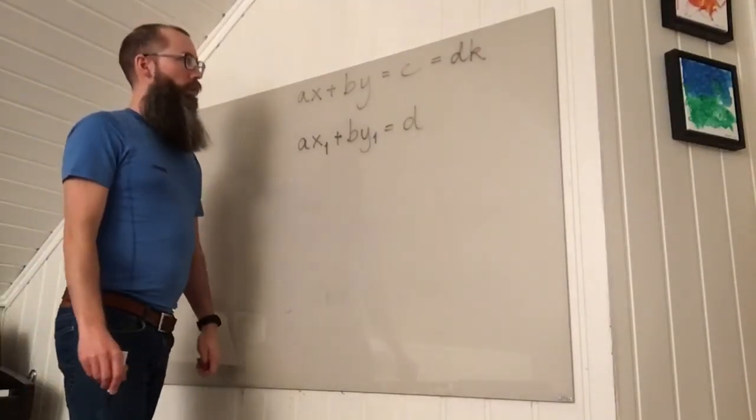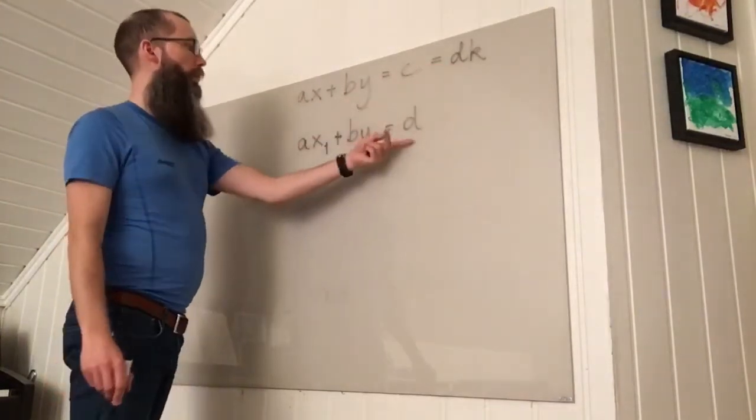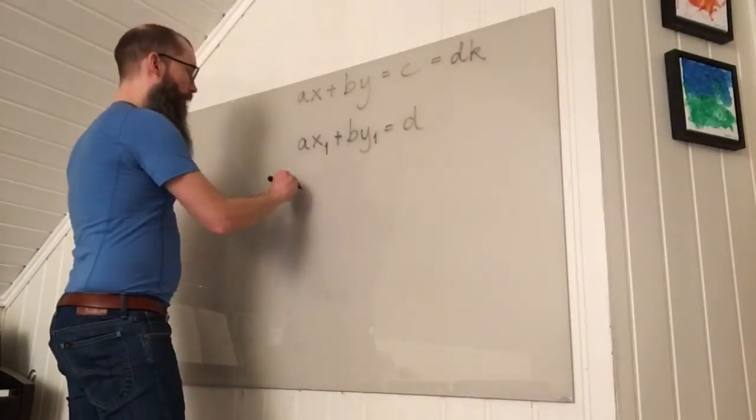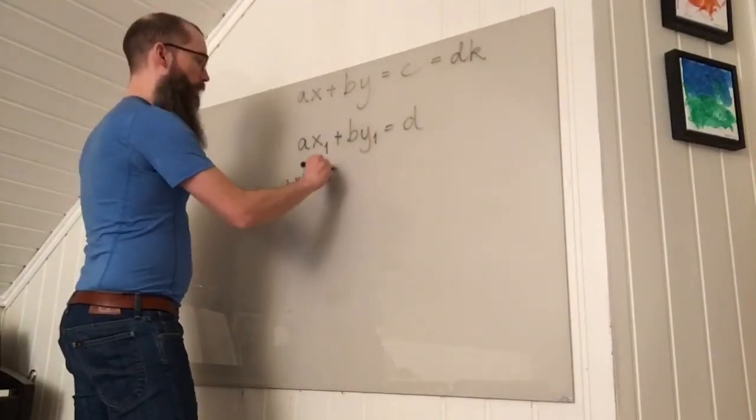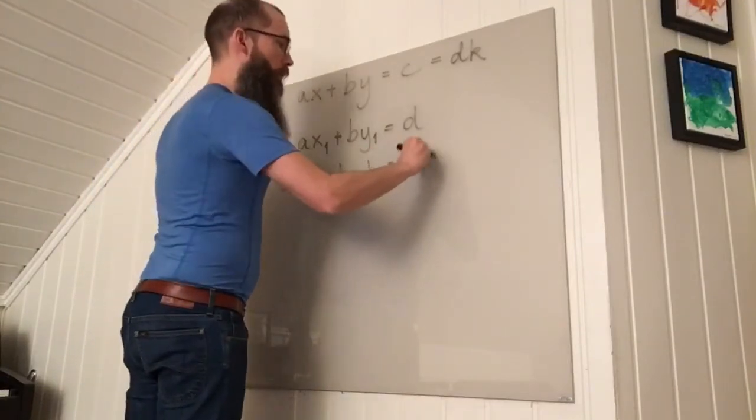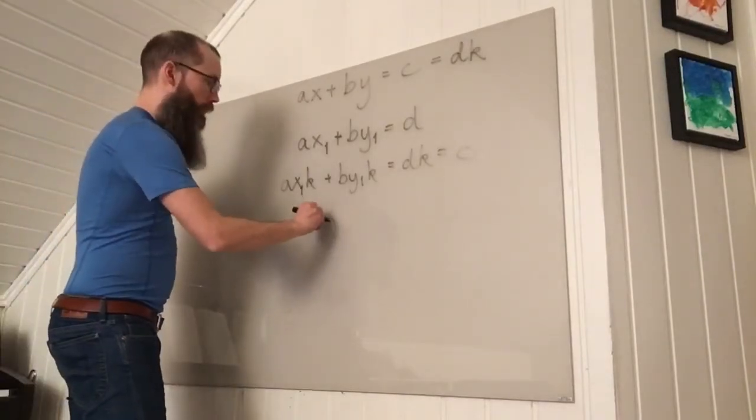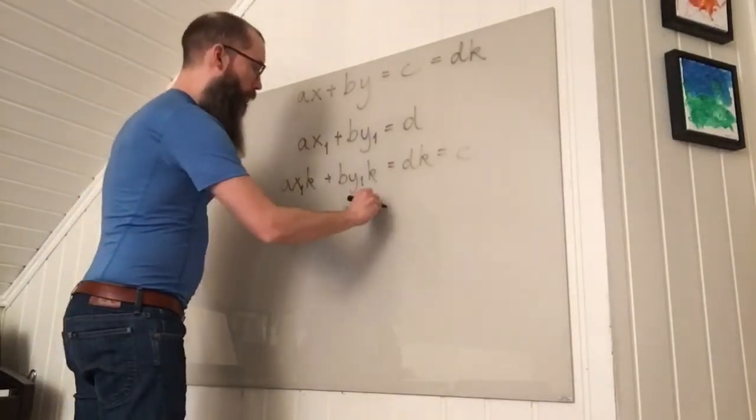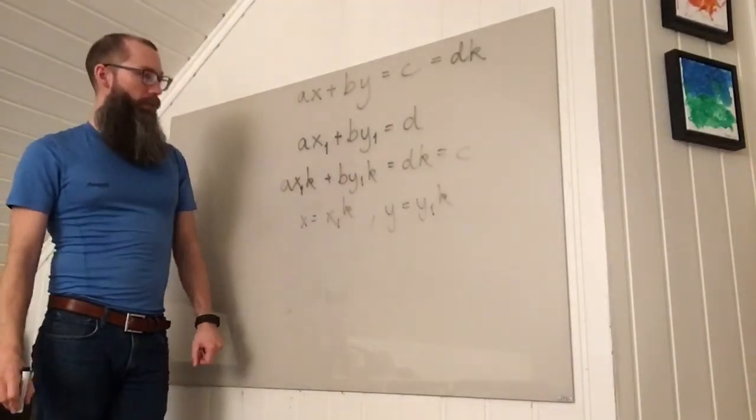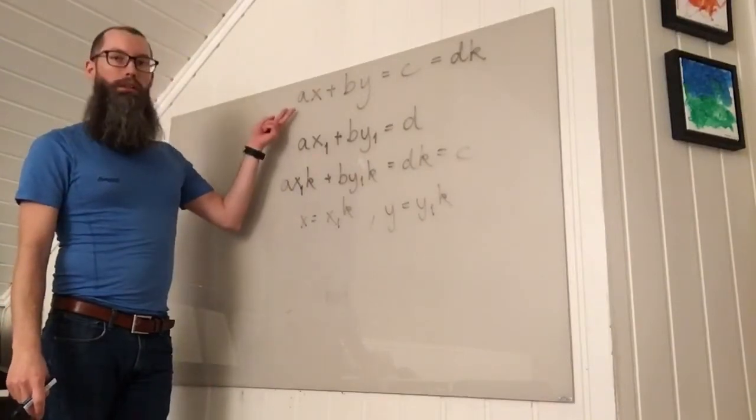Okay, so I want a solution to this equation. And if I scale this equation by K, I get A X1K plus B Y1K equals DK, which is C. So we have a solution: X equals X1 times K, Y equals Y1 times K. So this shows how we can find one solution to the Diophantine equation we started out with.